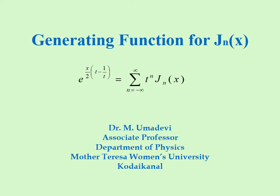Now we will derive the generating function for the Bessel differential equation Jn of x, that is to prove: e to the power x by 2 into t minus 1 by t is equal to summation n is equal to minus infinity to plus infinity, t power n times Jn of x.